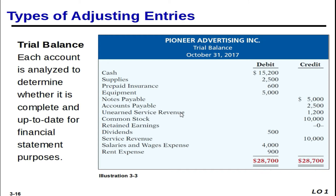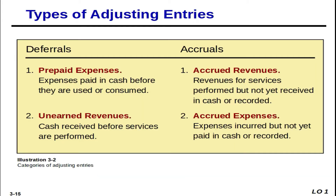Welcome back. This is Part 2 of the accounting cycle, Step 5: journalizing and posting adjusting entries. Last time we explained what accrual accounting is, we got into the time period assumption, and we looked at the four different types of adjusting entries — those related to deferrals and those related to accruals.